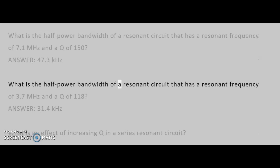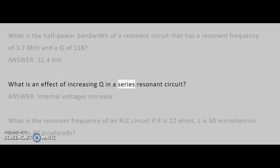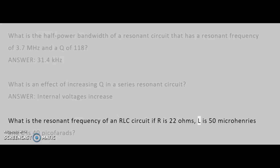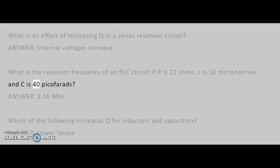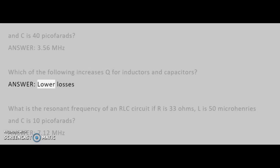What is the half-power bandwidth of a resonant circuit with a resonant frequency of 3.7 MHz and a Q of 118? Answer: 31.4 kHz. What is an effect of increasing Q in a series resonant circuit? Answer: Internal voltages increase. What is the resonant frequency of an RLC circuit if R is 22 ohms, L is 50 microhenries, and C is 40 pF? Answer: 3.56 MHz. Which of the following increases Q for inductors and capacitors? Answer: Lower losses.